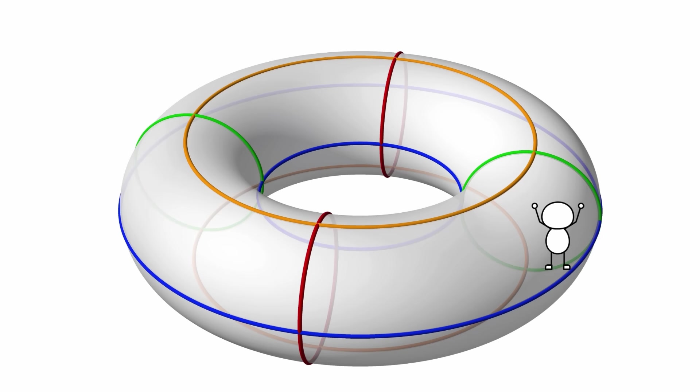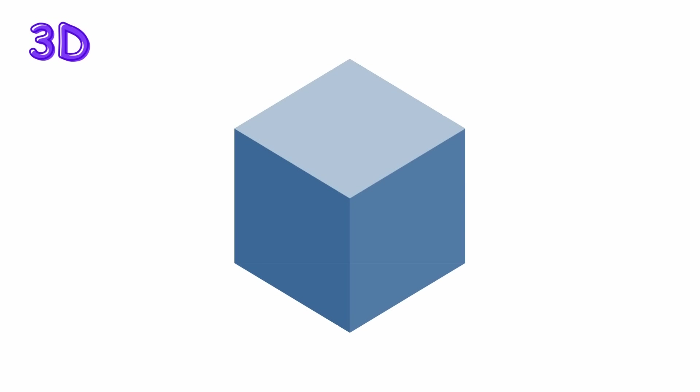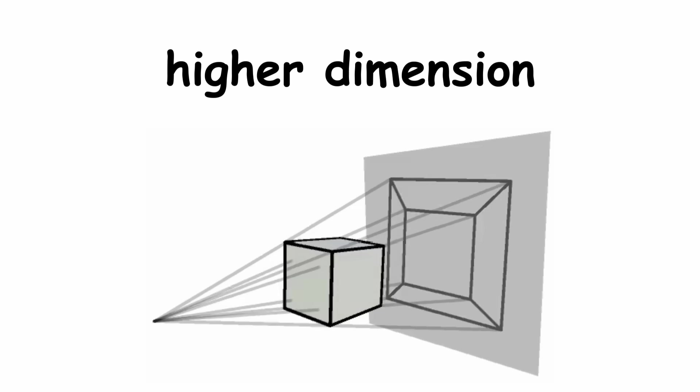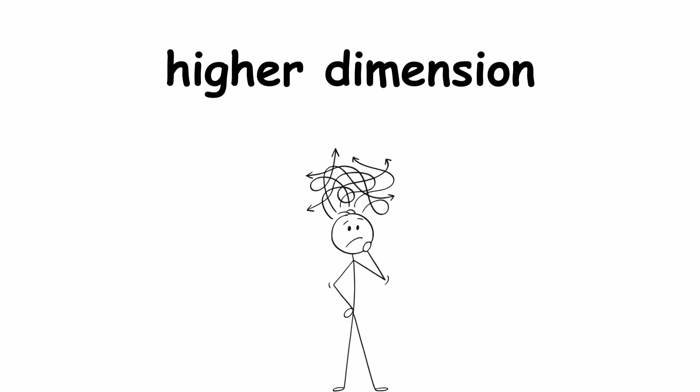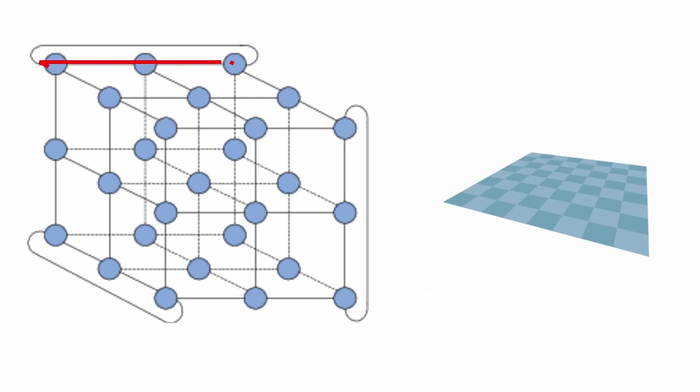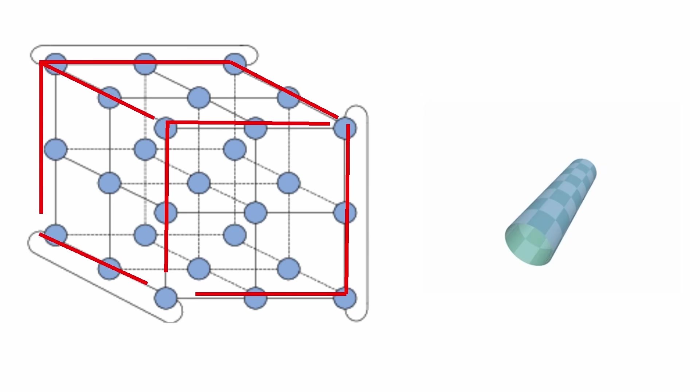We can do a similar thing for a 3D object, a solid cube. However, this requires stretching and folding the cube up into a higher dimension, so it's harder to visualize. Nevertheless, we can glue each pair of opposite faces of the cube together, similarly to what we did for the rectangle. If we do this for the cube, the shape we get is called a 3 torus.